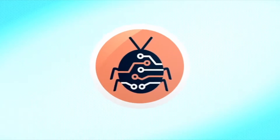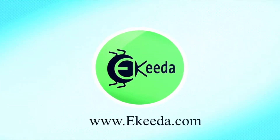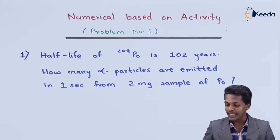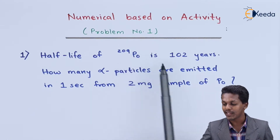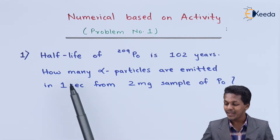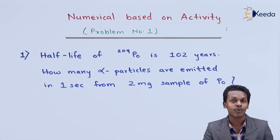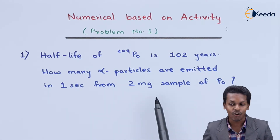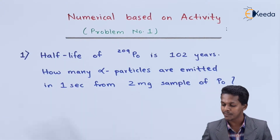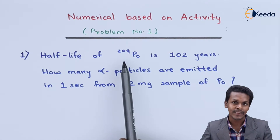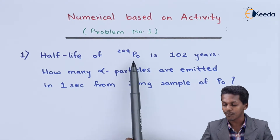The question we have to solve is: the half-life of polonium having an atomic mass number of 209 is found to be 102 years. How many alpha particles are emitted in one second from a two milligram sample of polonium? So we have to find out the activity of this polonium. The half-life is given as 102 years, and 209 represents the atomic mass number of polonium.